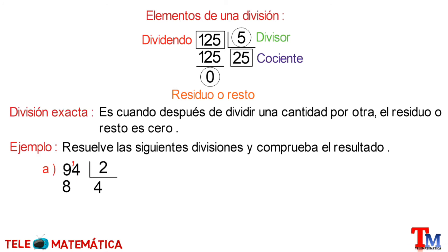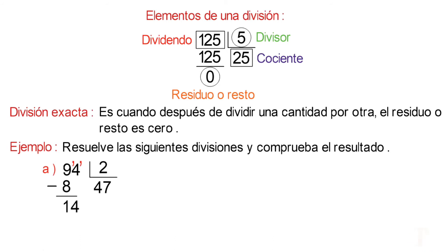Ese número es el 4. Multiplicando 4 por 2 es igual a 8, que lo ubicaremos debajo del 9, y procedemos a restar ambos números, quedando como resultado 1. Como este valor es menor que el valor del divisor, seleccionaremos la siguiente cifra del dividendo, que sería el 4. Un número que multiplicado por 2 es igual a 14 sería el 7. Y 7 por 2 es 14. Procediendo a la resta, nos quedaría como resultado 0.